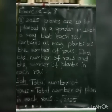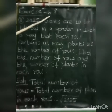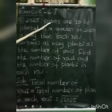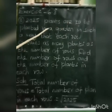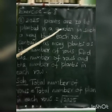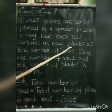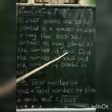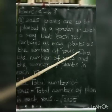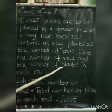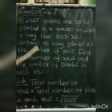Good morning students. Exercise 6.3, 8th sum. 2025 plants are to be planted in a garden in such a way that each row contains as many plants as the number of rows. Find the number of rows and the number of plants in each row.